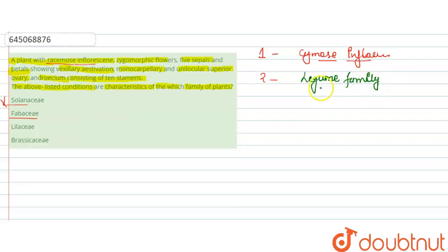It has the racemose type of inflorescence. They also have the zygomorphic flower, five sepals and petals, and vexillary type of aestivation is present here. Next is the monocarpellary, unilocular superior ovary, and androecium consisting of 10 stamens. All these characteristics are present in the family of Fabaceae.